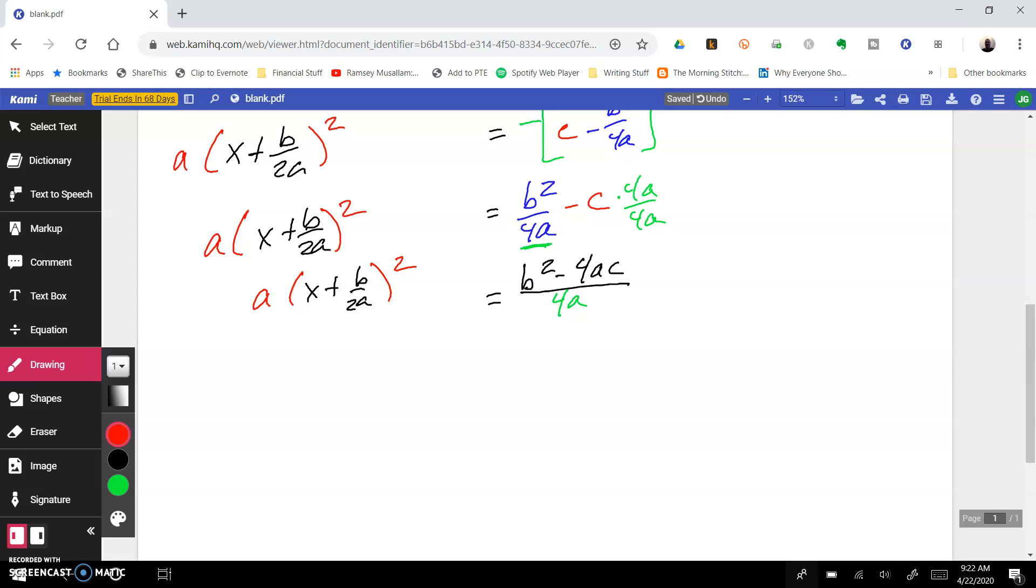And on the other side we still have a times x plus b over 2a quantity squared. Believe it or not we're getting close to the end. Hopefully this is starting to look like the quadratic formula to you. You can start to see the b squared minus 4ac begin to appear in our expression. Now we need to get rid of this a. So we're going to divide both sides by a. And that's really the same thing as multiplying by 1 over a. And when we do that, that leaves us with x plus b over 2a quantity squared on the left. And on the right I have b squared minus 4ac all over 4a squared, because top times top, bottom times bottom in our fraction, 4a times a gives us 4a squared.